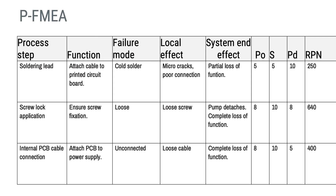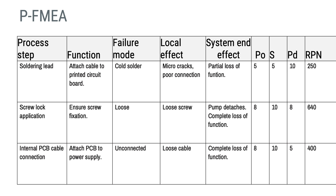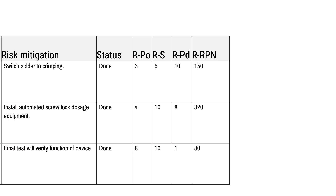Here is another example — in this case it is a process FMEA, or PFMEA. Instead of looking at how parts of the design could fail, we look at how the production process could fail. Please note the PD, which is an abbreviation of probability of detection or detectability. This is a measure of how easy it is to detect the failure and prevent it from being released and having an impact on the reliability of the product. The more likely the failure is to be detected, the lower the PD score, meaning the risk would receive lower priority on the RPN scale. Sometimes we can implement really efficient in-process controls or final tests that will prevent a future user from experiencing the consequence of our process failures. This brings down the residual PD score, lowering the residual RPN number.